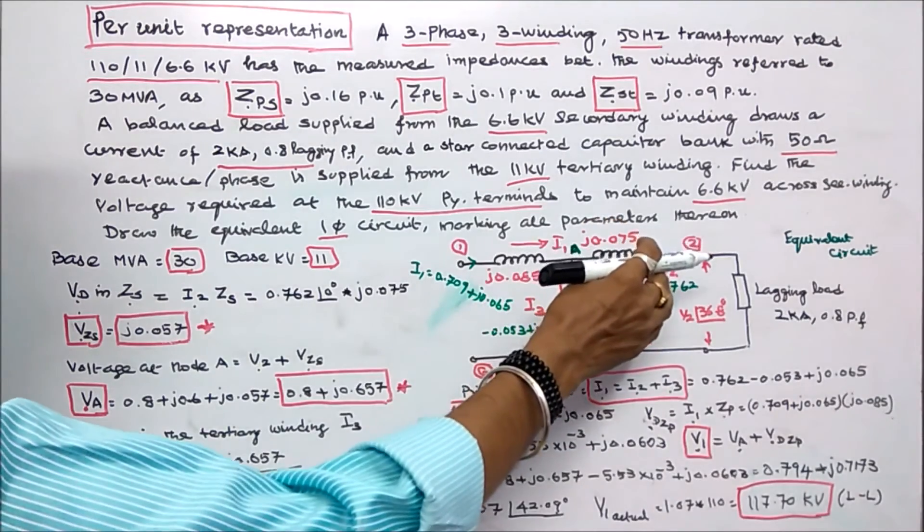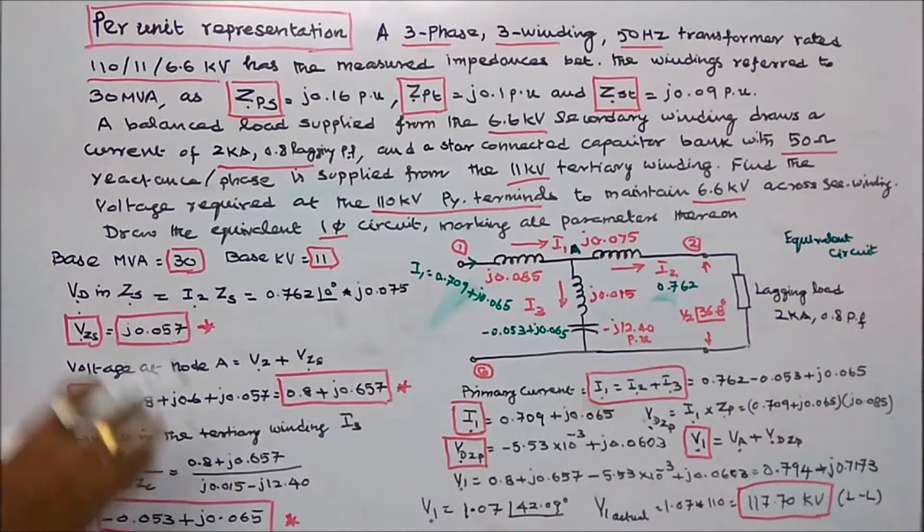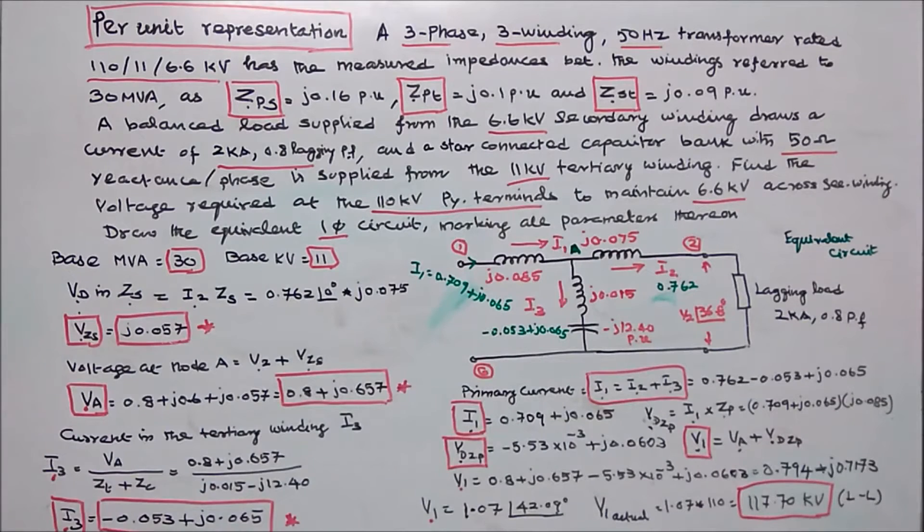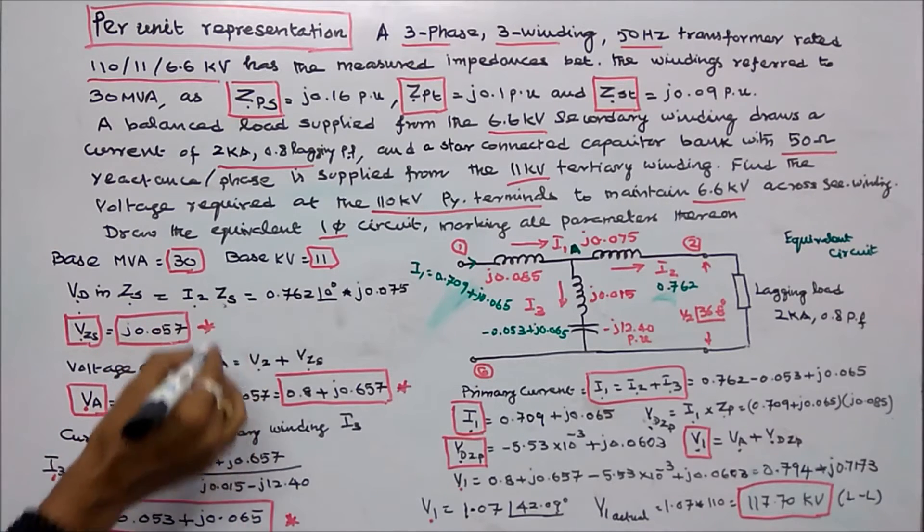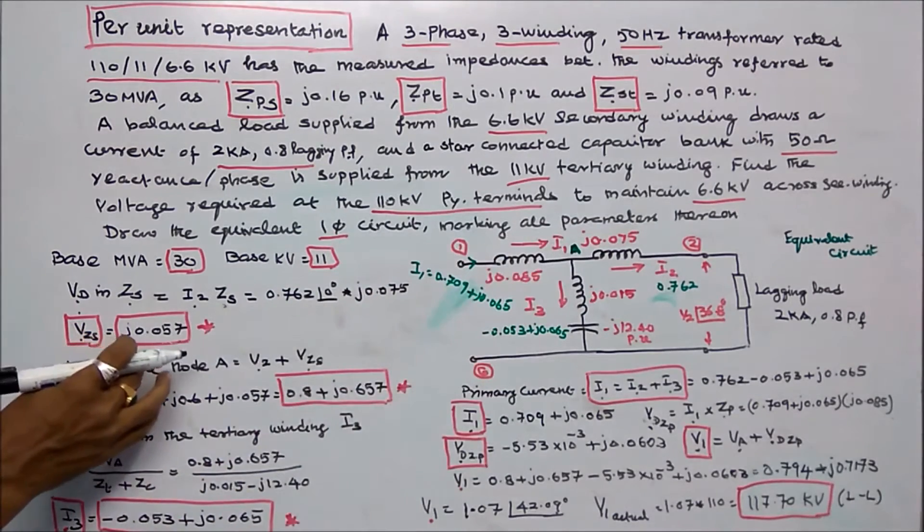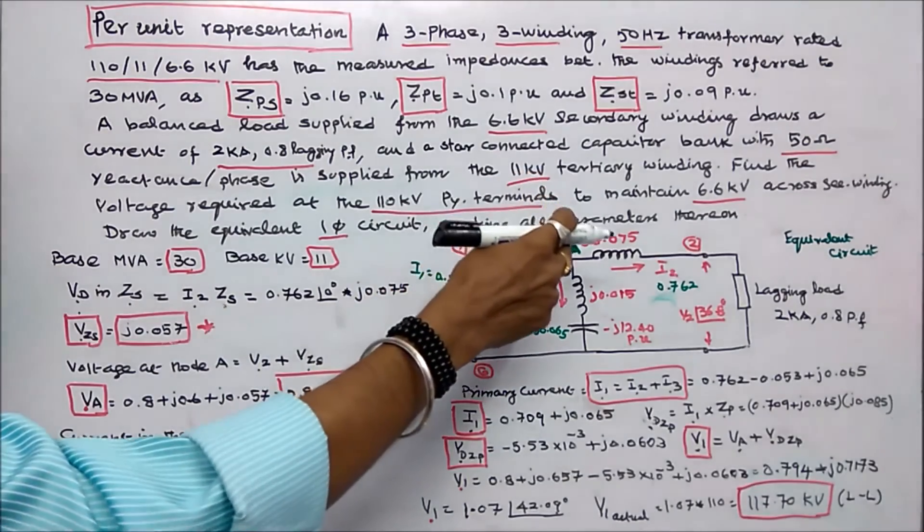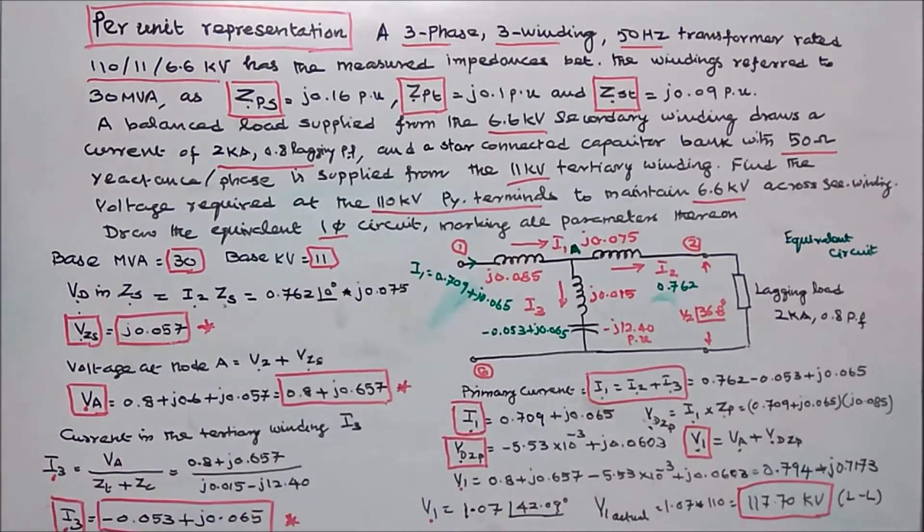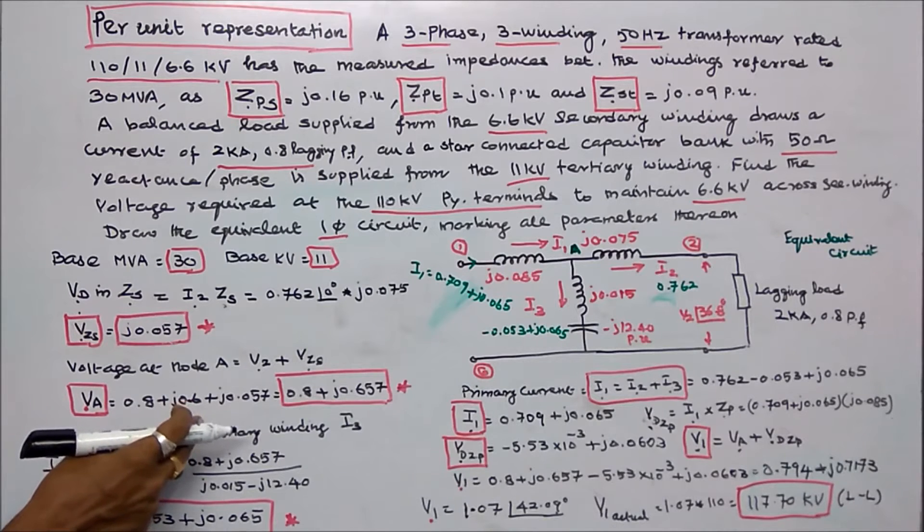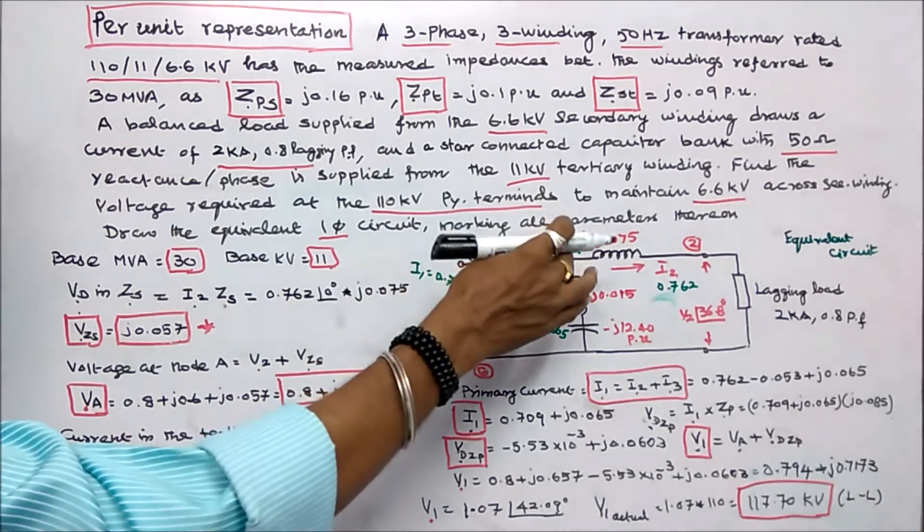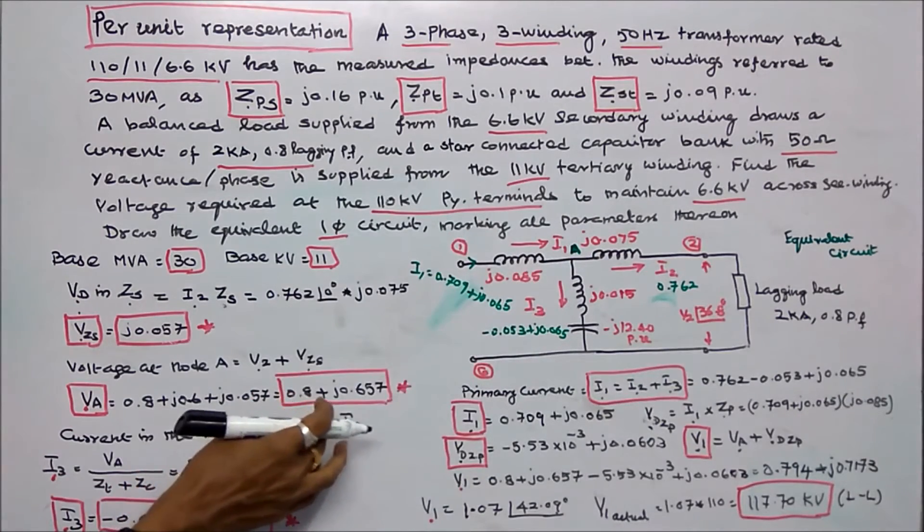The next step I have to find the voltage drop in the secondary winding. Voltage drop in the secondary winding is I2 into secondary impedance. Per unit I2 is 0.762 angle 0, Zs per unit is J 0.075. Therefore voltage drop is equal to J 0.057. Therefore voltage at node A is equal to 0.8 plus J 0.657.